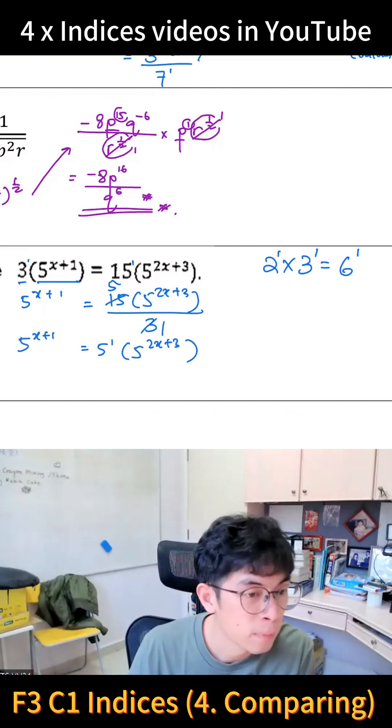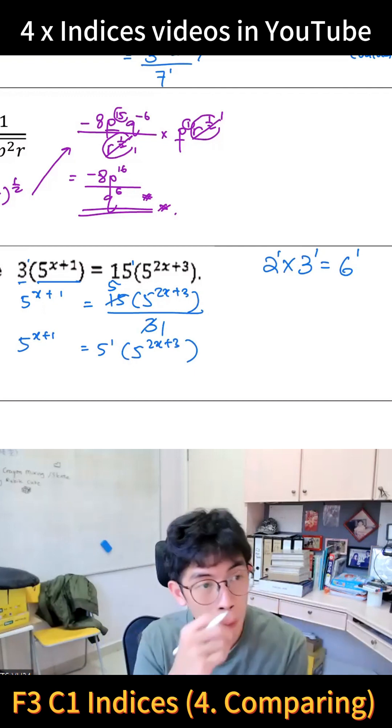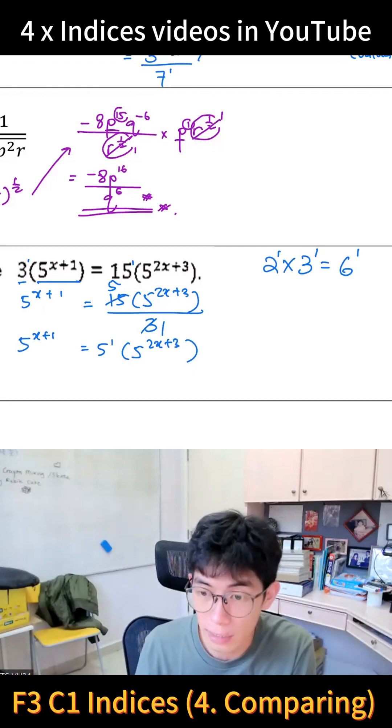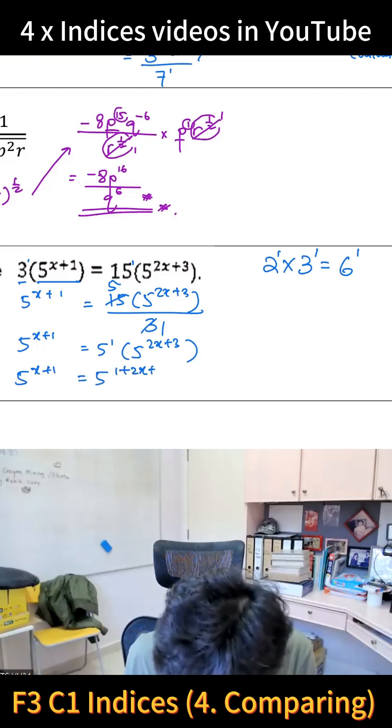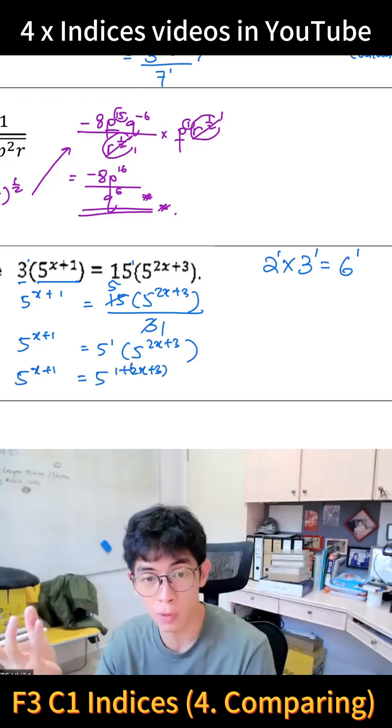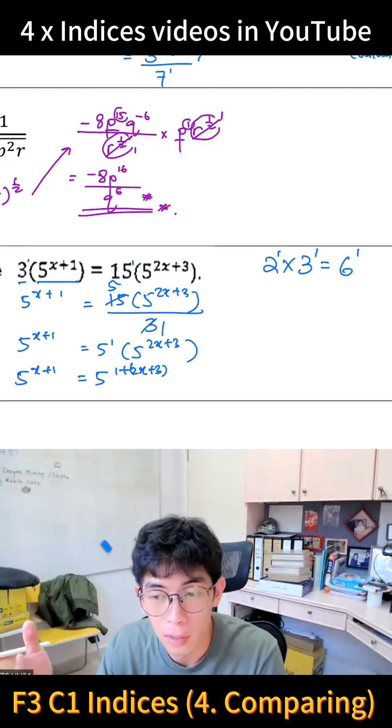So 5^(x+1) equals 5^(1 + 2x + 3). The bracket is just to put it over there so you know we are adding the other part. If there's a minus, you have to be careful because it might affect the plus 3 behind.